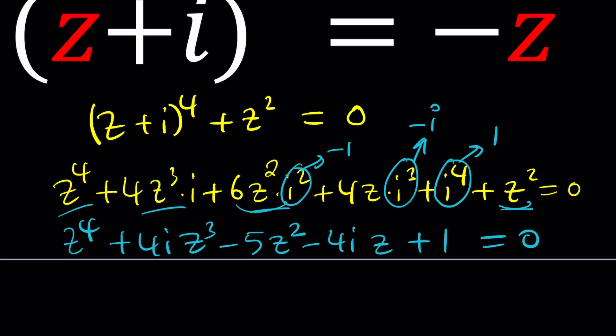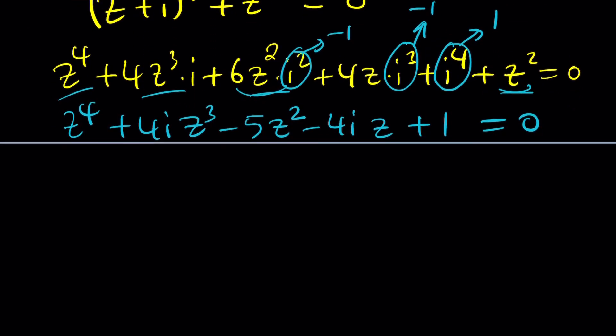So that's a really interesting quartic. You can use the quartic formula. But you kind of have to get rid of the Z cubed first. You can use Ferrari's method, right, which is something that we've been using lately. Or there are other methods as well.